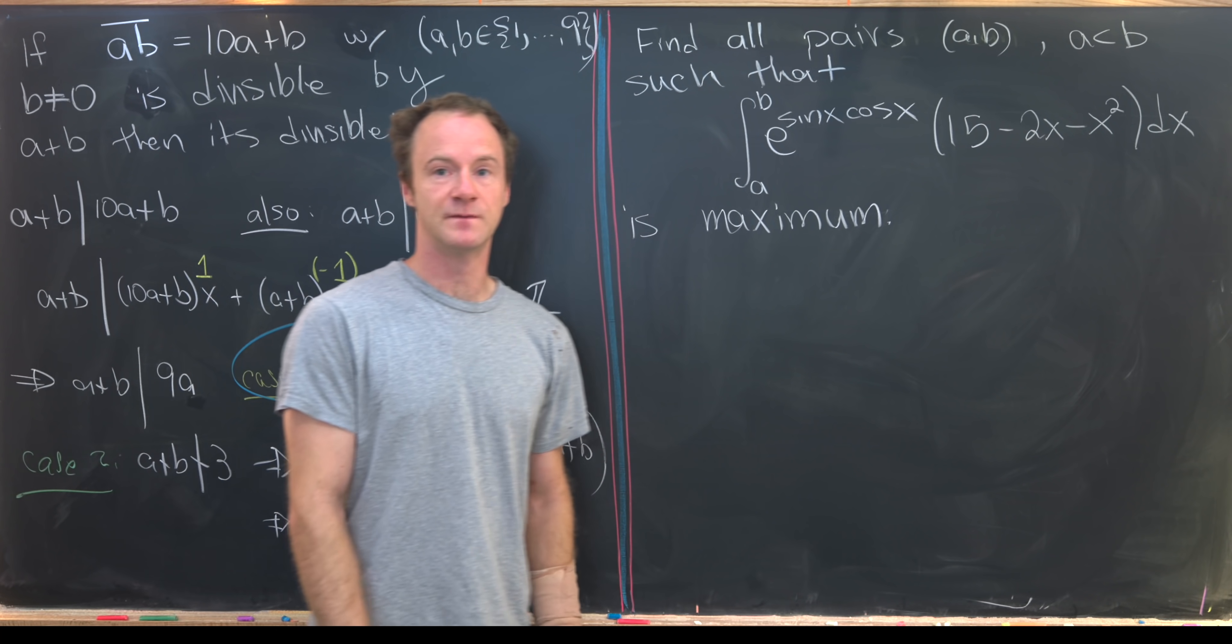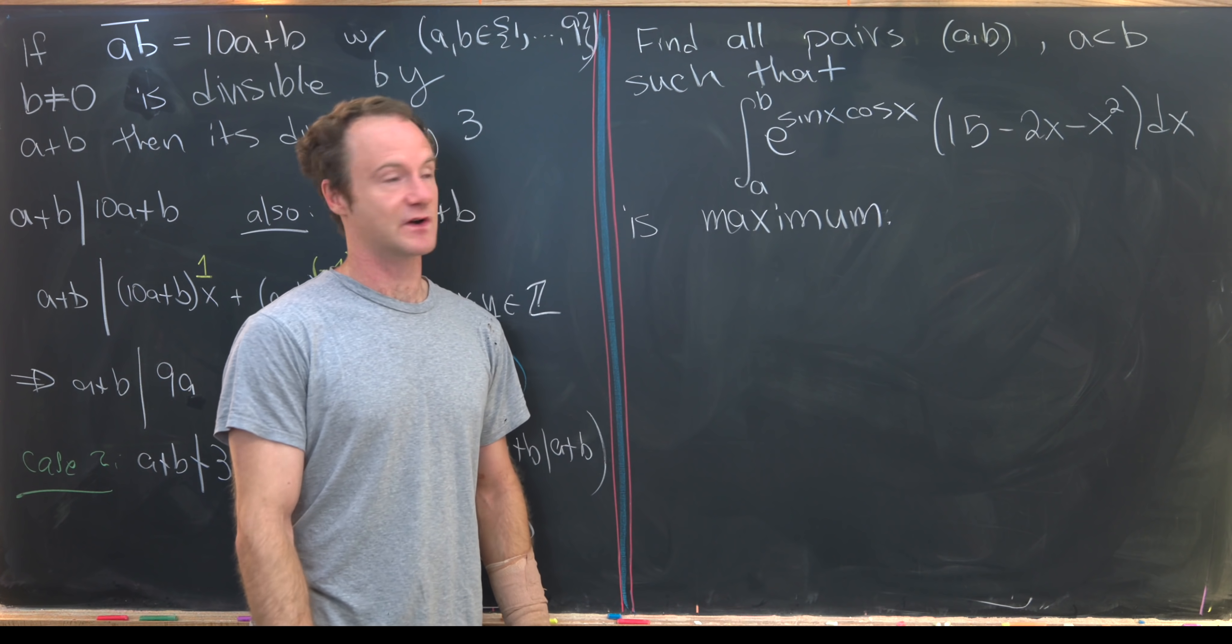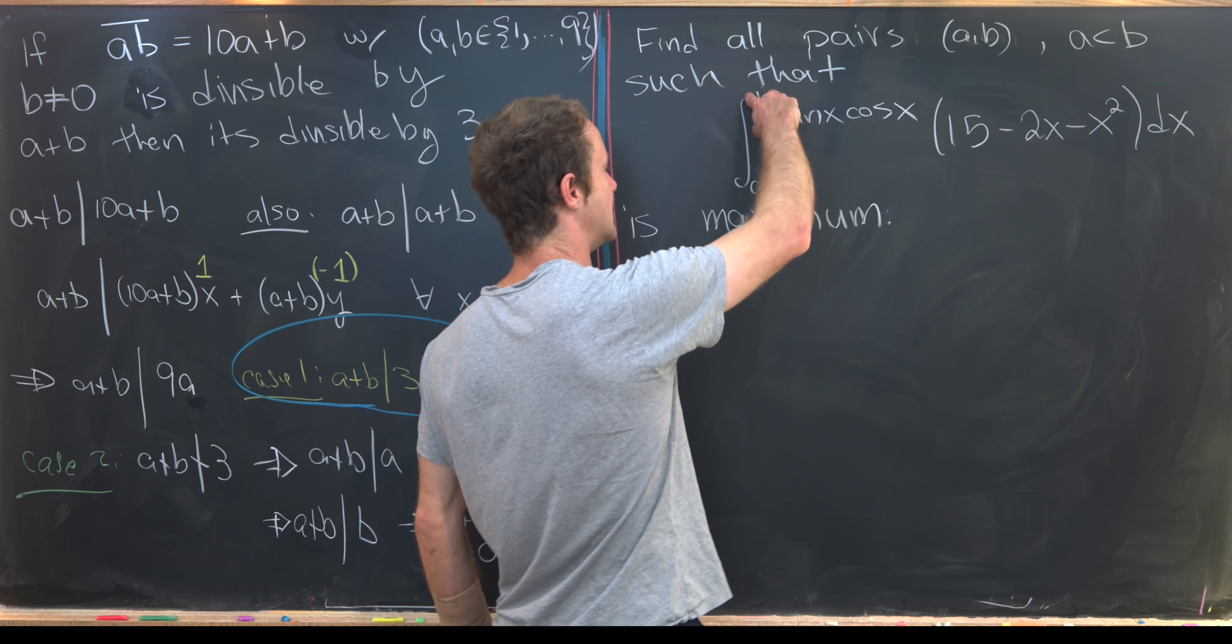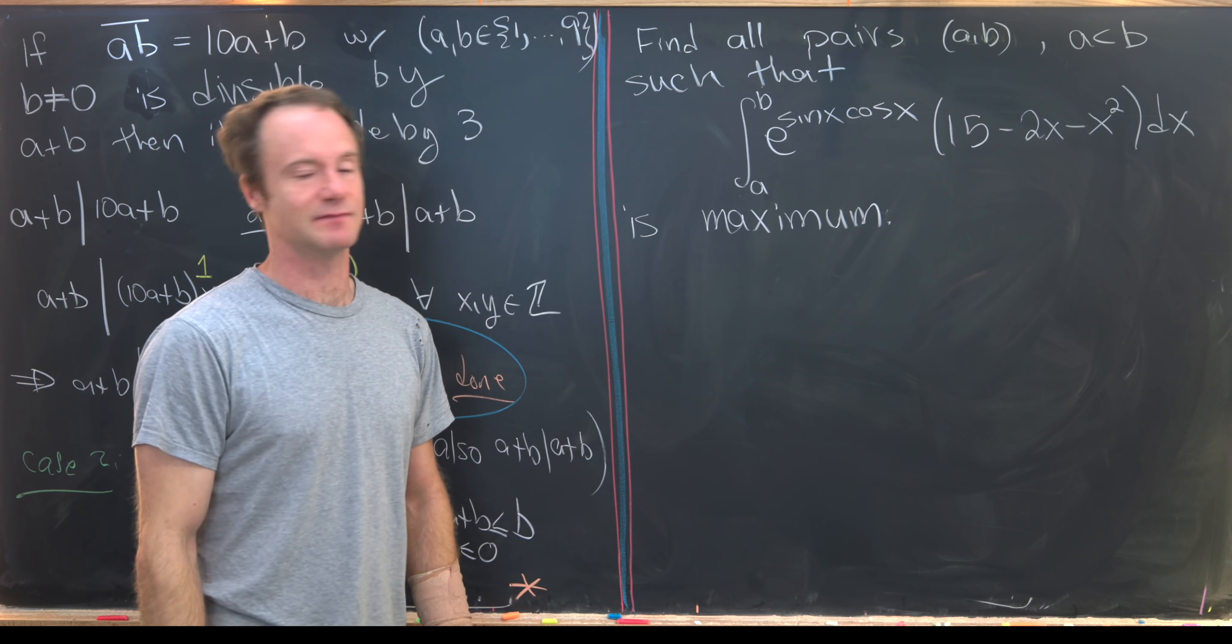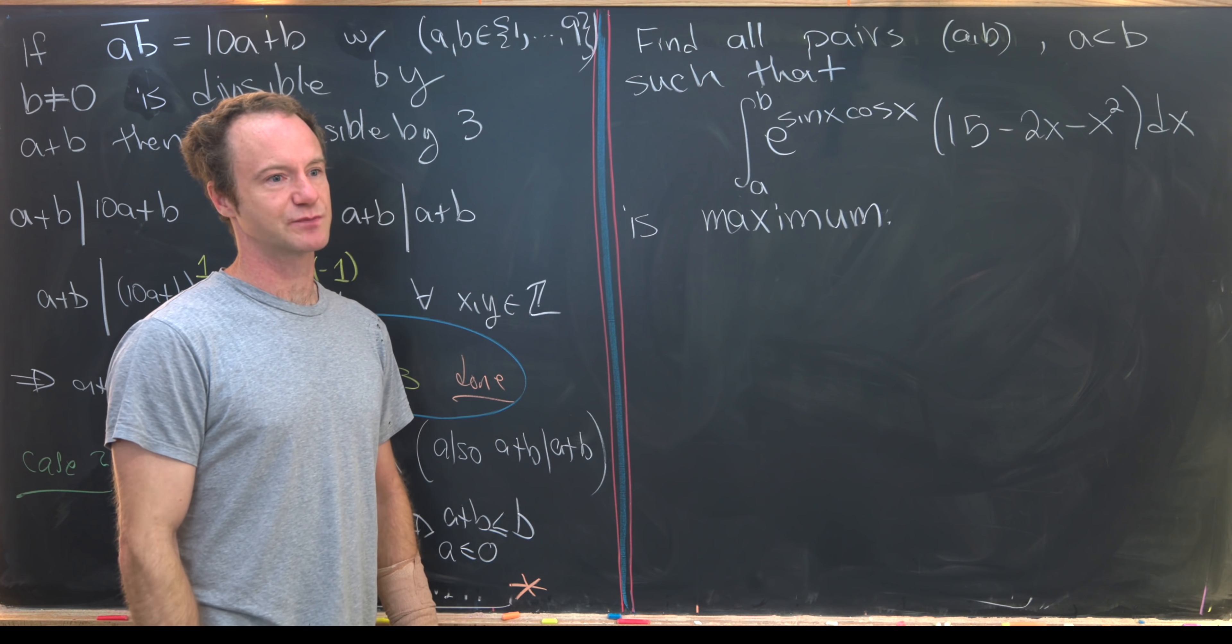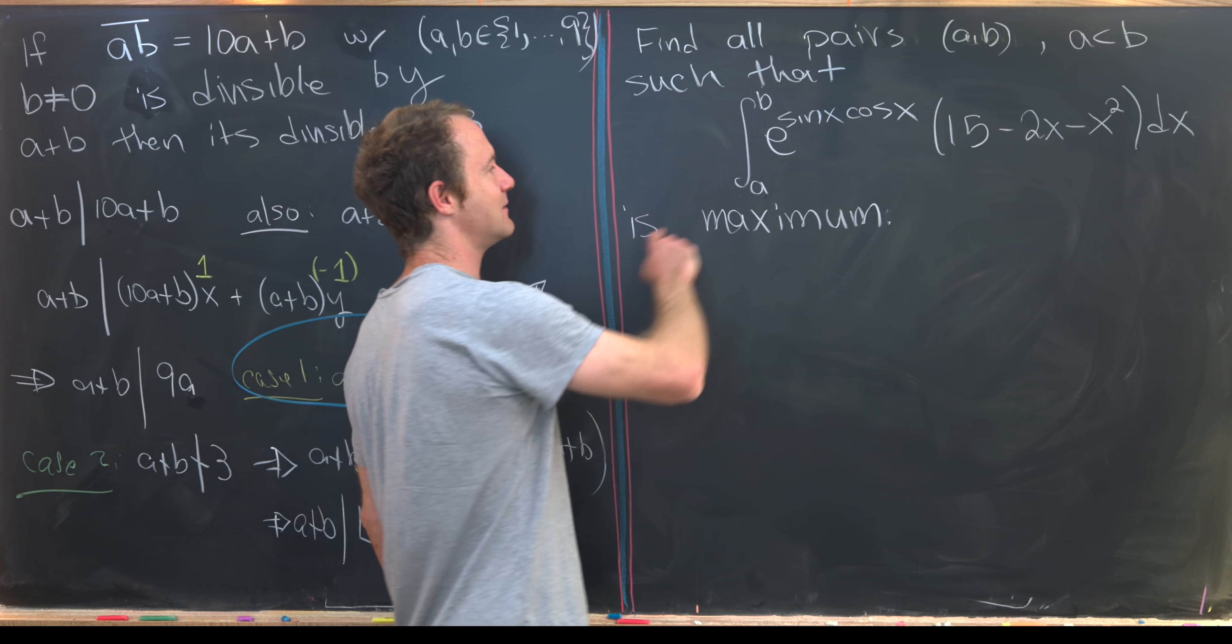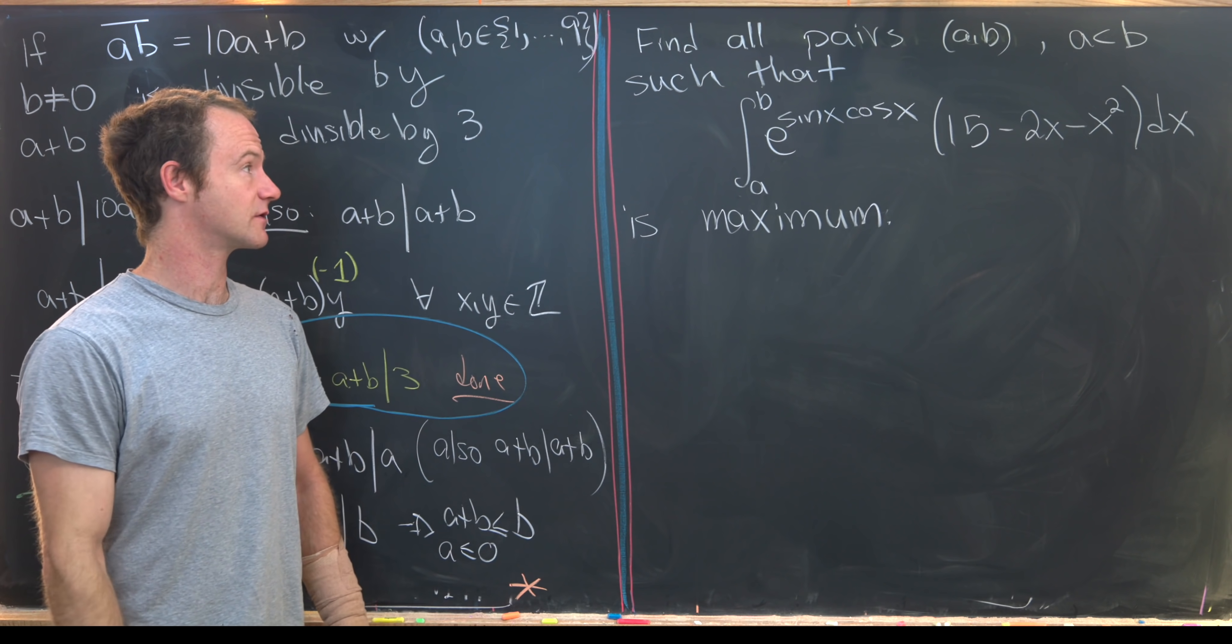Okay. Now let's move on to this integral. So our goal is to find all pairs of real numbers, a and b. So these are obviously different than these natural numbers over here, a and b, where a is less than b. That makes the following integral, which is complicated, a maximum. So we've got the integral from a to b of e to the sine x cosine x times this polynomial 15 minus 2x minus x squared. So we want to maximize that integral. There's actually a hint built into the writing of this problem that there's probably a trick. And that hint is this function is either very, very difficult to integrate or impossible to integrate. And you can see that because you've got this crazy combination of exponentials and sines and cosines without anything to play off of outside of the integral.